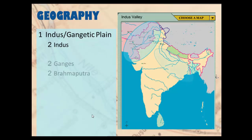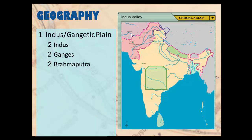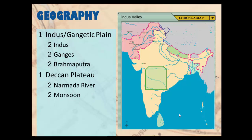Continuing with geography, we have the Indus, the Gangetic Plain, and the Deccan Plateau — the highlands. The Brahmaputra is one of the rivers in the Gangetic Plain. The Deccan Plateau has seasonal rains and rivers like the Narmada River running through it, and people there are dependent on the monsoons.